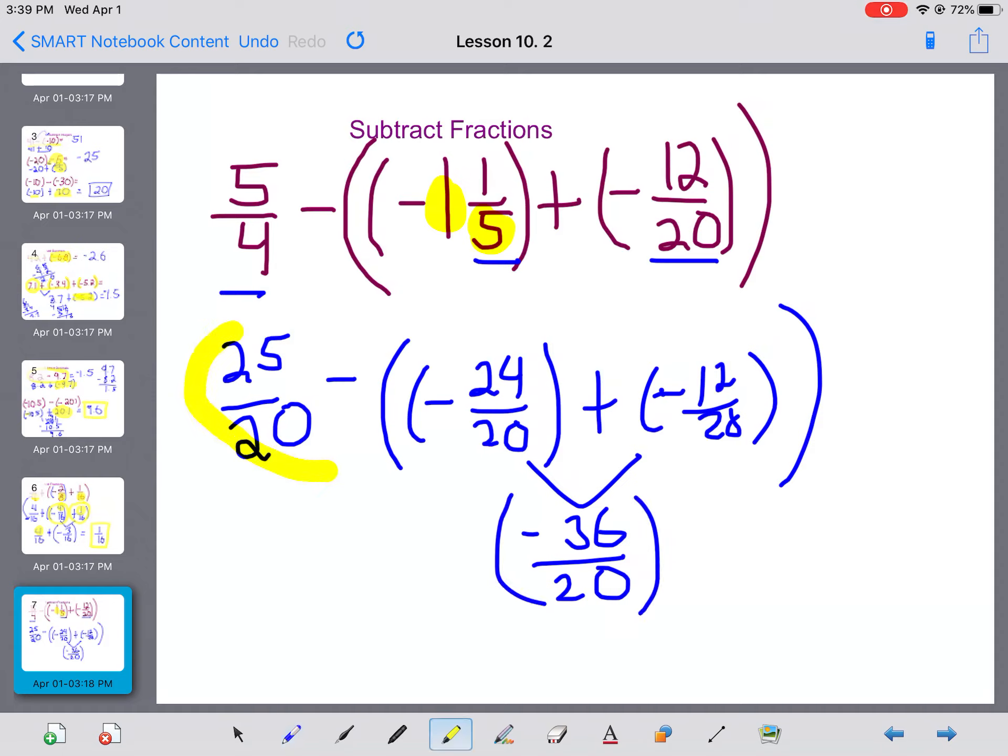Again, don't forget to write out what's left. This has not been dealt with yet. So, then I do 25 20ths, take away negative 36 20ths. When I'm subtracting with integers, I can leave, switch, switch. So, I'm going to leave this first part, I'm just going to do it here because I'm running out of room, switch to addition, and then my negative 36 20ths is actually going to become positive.